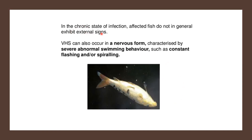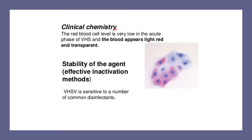In the chronic state of infection, affected fish do not generally exhibit external signs. VHS can also occur in a nervous form characterized by severe abnormal swimming behavior such as constant flashing and/or spiraling. The RBC level is very low in the acute phase of VHS, and the blood appears light red and transparent.